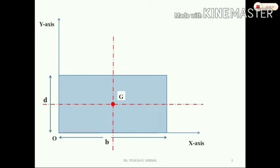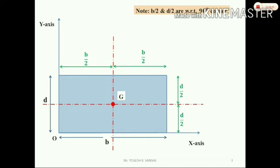The centroid is capital G. Note: b by 2 and d by 2 with respect to 90-degree corners. You have 4 corners and all 4 angles are 90 degrees. If you draw the axis of symmetry — the perpendicular line — you have 90 degrees. From each corner, the distance is either b by 2 or d by 2. Then you have the perpendicular lines intersecting at the G-point — the whole rectangle's center point. That is called the centroid.